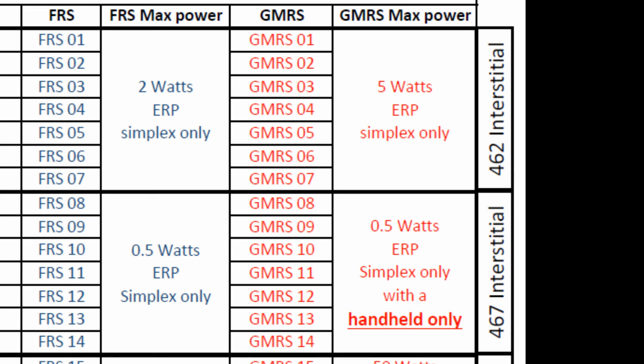If you look at the end of the chart, it says 462 interstitial and 467 interstitial. That fancy word means 'in between' — the frequency has four digits ending in five, which places it in between the main frequencies found in channels 15 through 22 and the repeater channels.